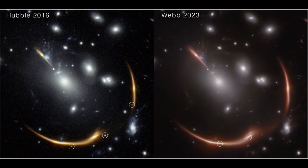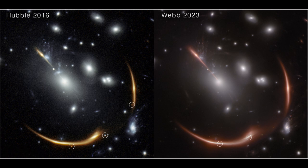The left panel displays a 2016 image from NASA's Hubble Space Telescope, featuring three visible instances of the multiply-imaged supernova Requiem in a distant galaxy, lensed by the galaxy cluster MAX-J0138. A fourth image is expected to appear in 2035. The right panel, captured by NASA's James Webb Space Telescope in November 2023, reveals a second multiply-imaged supernova, Encore, in the same galaxy — marking the first known system to produce more than one multiply-imaged supernova.